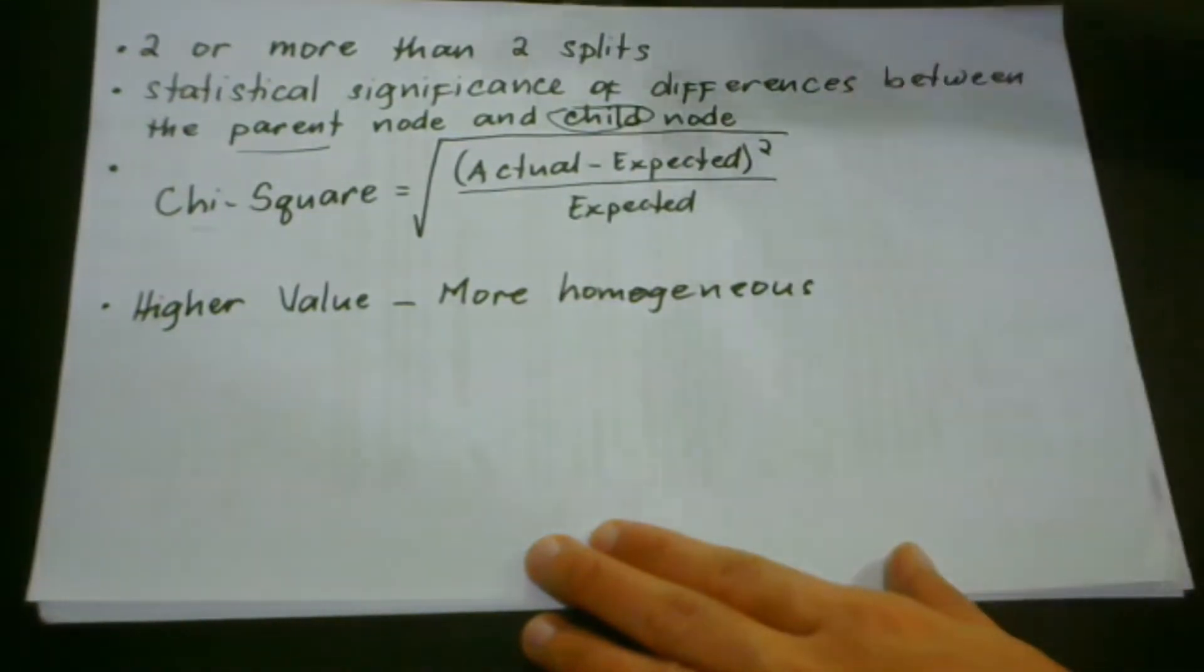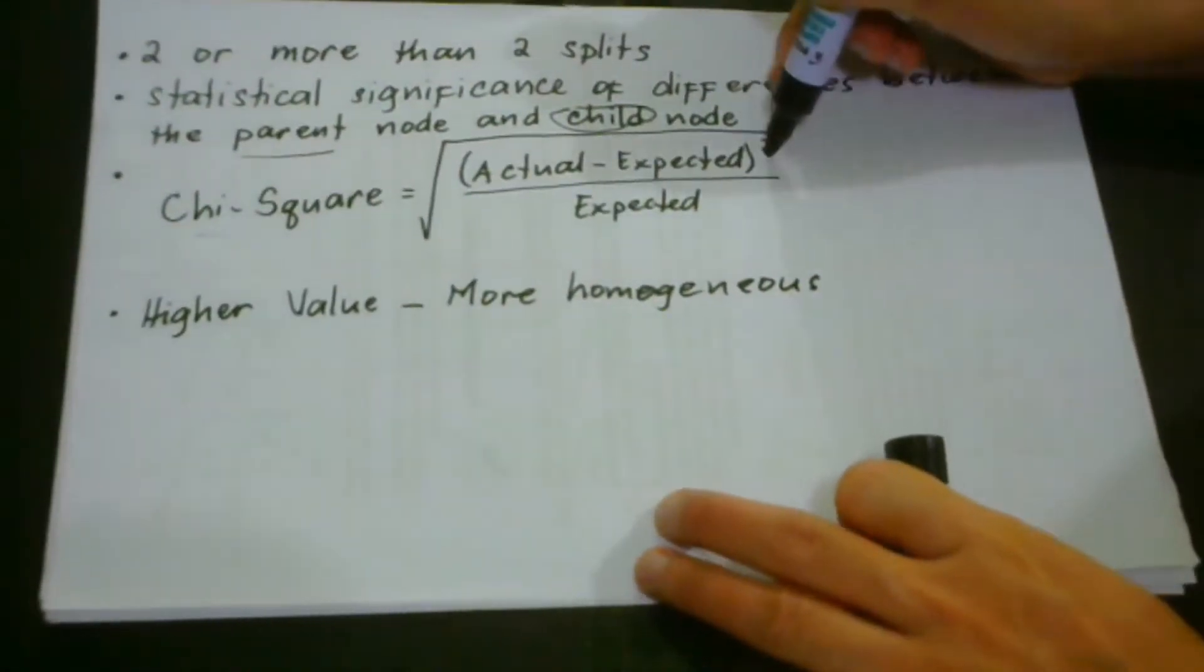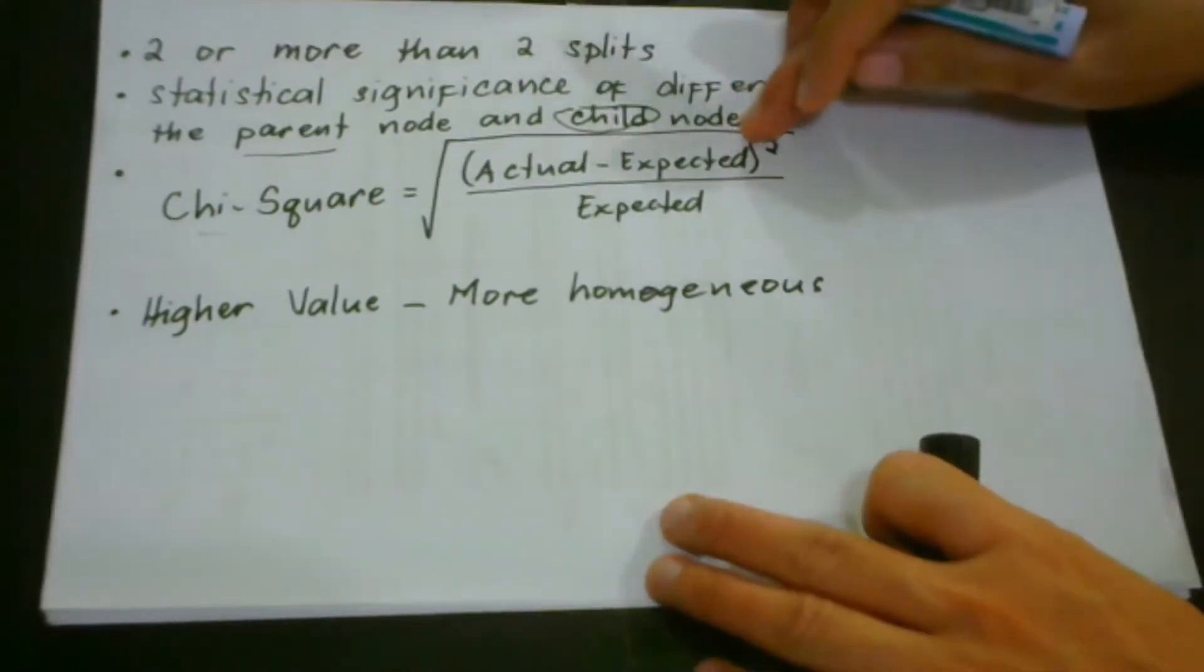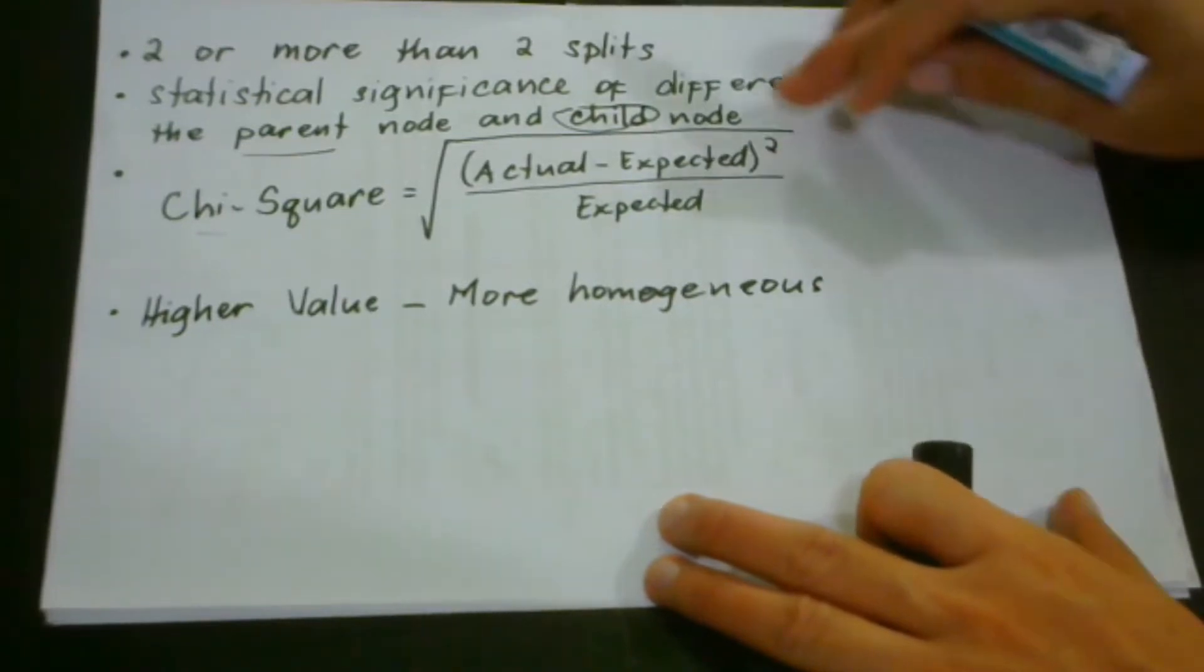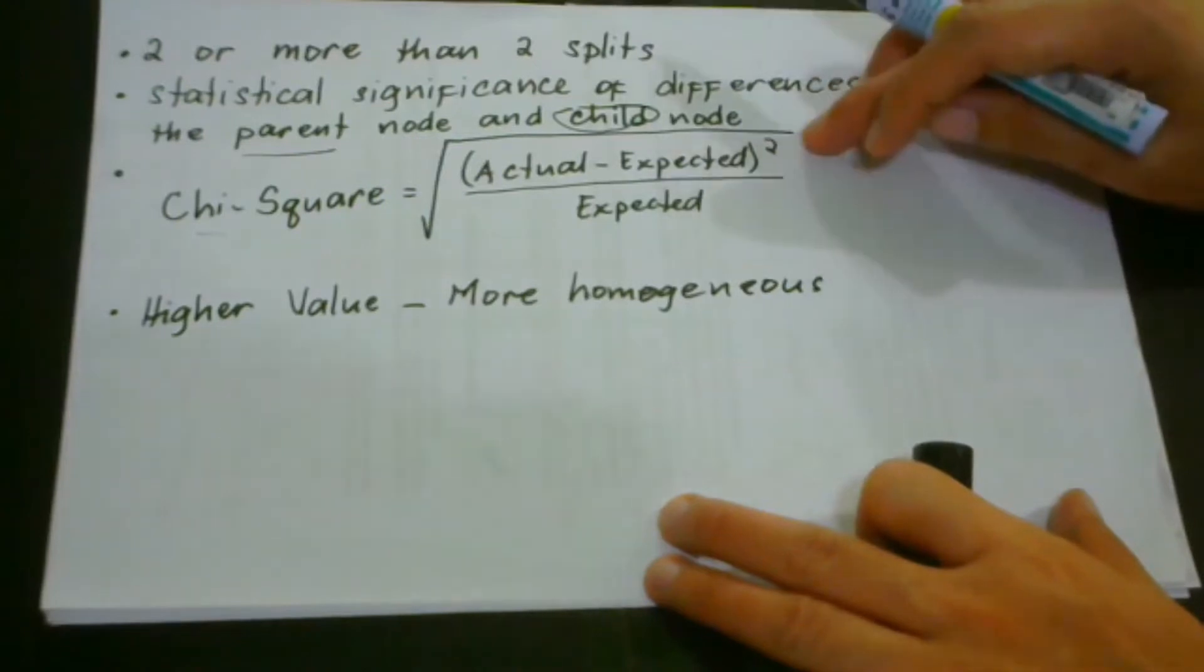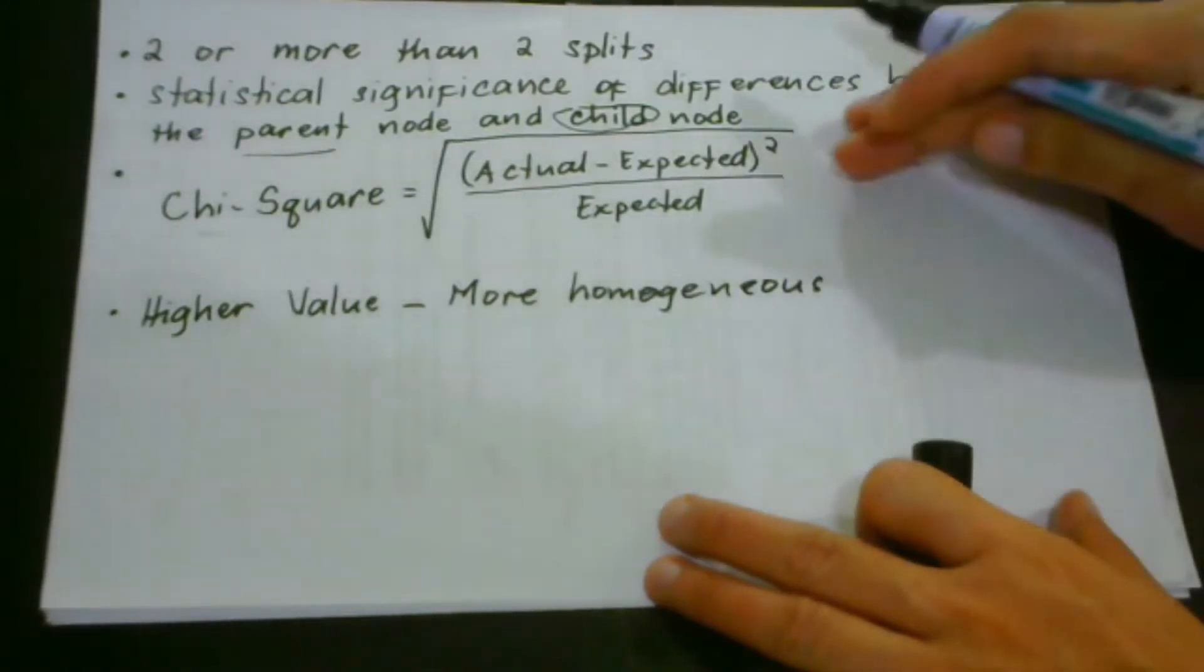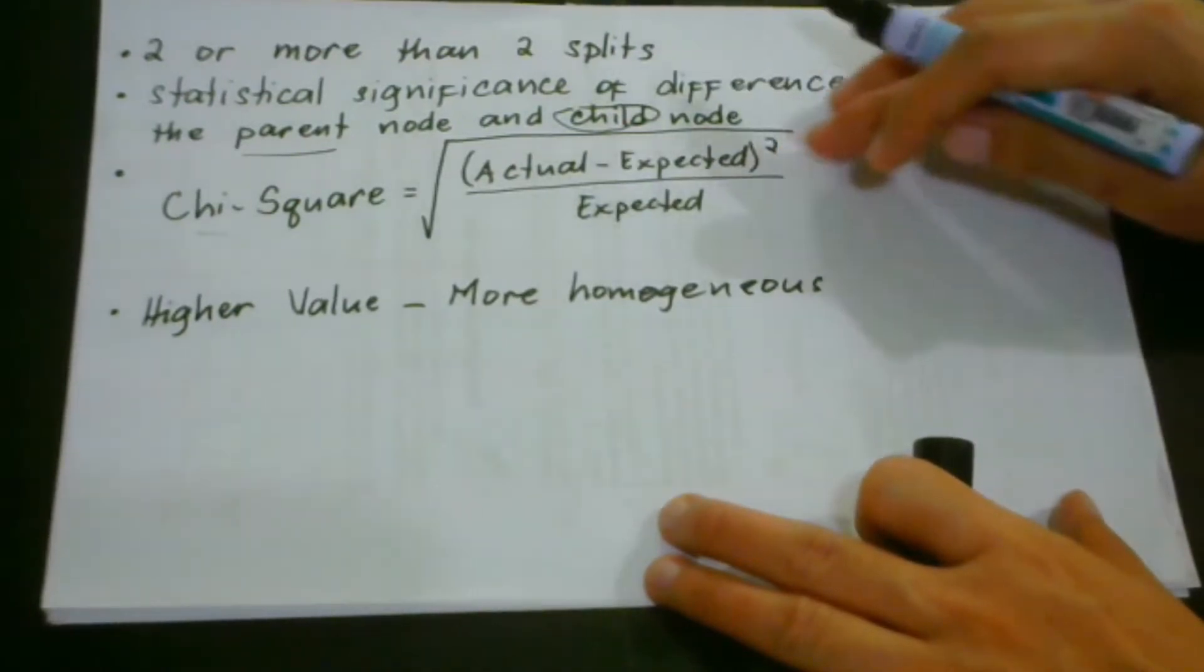As you can see here, we have the parent node and we have the child node. We also have to take note of the expected value and the actual value. So when we say the expected value, this is actually the expected value for a class in a certain child node, and this is based on the distribution of the classes in the parent node. As we go along later in our calculation, we may have a better understanding of this one.